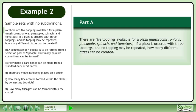In Part A, there are five toppings available for a pizza: mushrooms, onions, pineapple, spinach, and tomatoes. If a pizza is ordered with three toppings, and no topping may be repeated, how many different pizzas can be created?